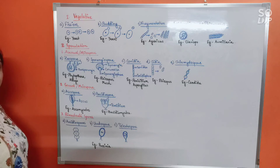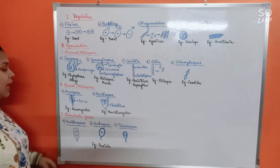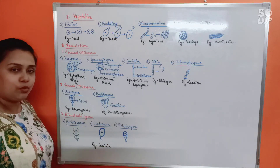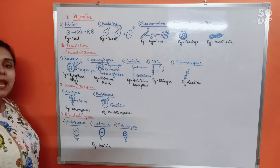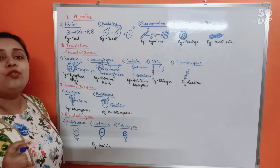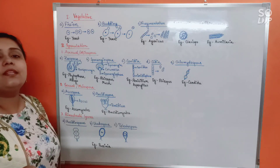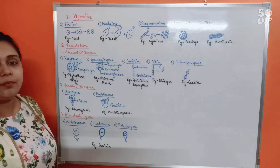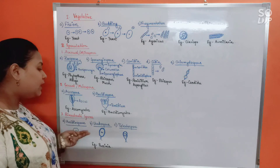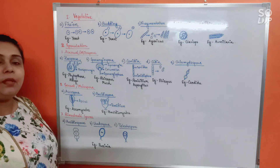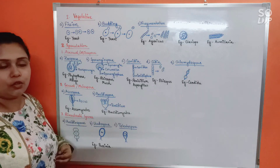Next, binucleate spores. Binucleate spores are spores which have not one but two nuclei. They are of three types: aeciospore, uredospore, and teliospore. They are structurally differentiated but all three have been observed to develop in the life cycle of one fungus — the higher fungus Puccinia. Puccinia is a parasitic fungus that causes wheat rust disease. In Puccinia's life cycle, all three types of binucleate spores are observed. That covers the vegetative and sporulation parts of reproduction.